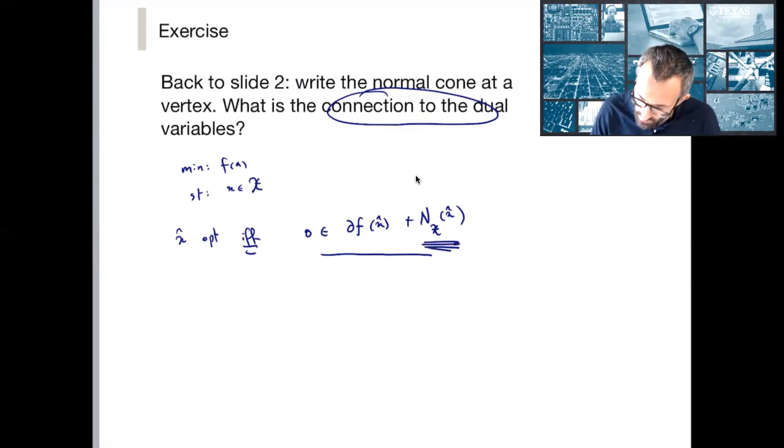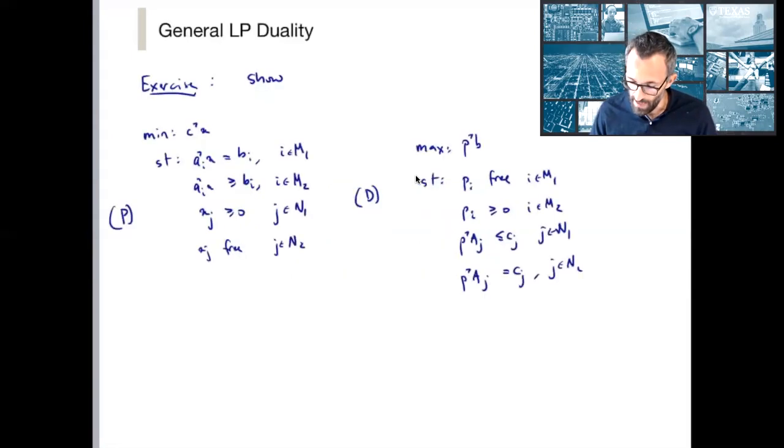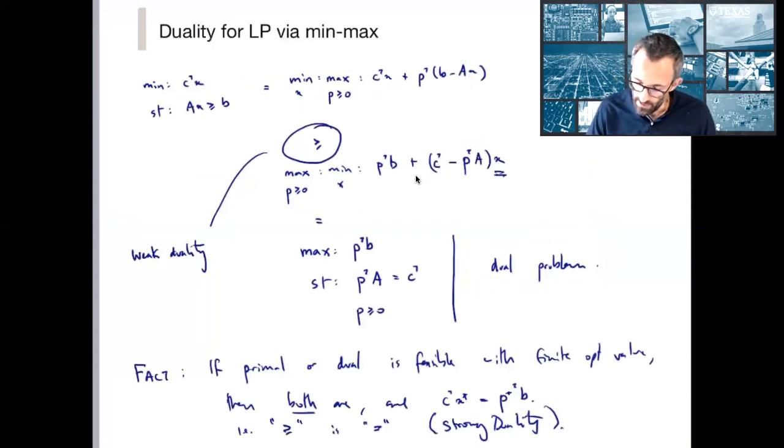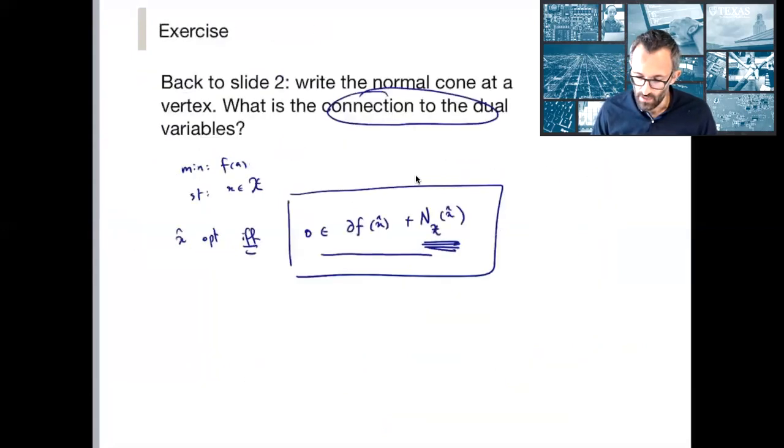So searching for a certificate in this very general format for linear programming exactly corresponds to searching for a p that satisfies these constraints. These, in other words, these constraints are exactly what defines the normal cone, or a little more easily, if you want a more limited setting, these constraints here are what define the normal cone. So this will be useful for you to do.